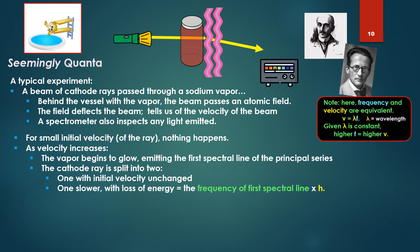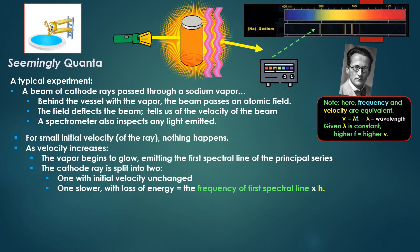Velocity equals lambda times the frequency, and given lambda is a constant, obviously the higher the frequency, the higher the velocity. The vapor begins to glow, emitting the first spectral line of the principal series, picked up by the spectrometer. The cathode ray is split into two, one with the initial velocity unchanged, one slower with loss of energy, and this becomes the frequency of the first spectral line times H, Planck's constant.